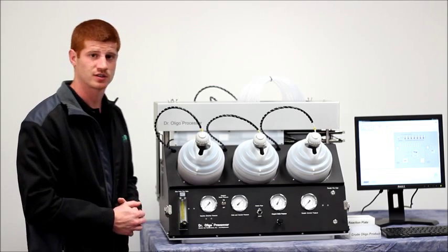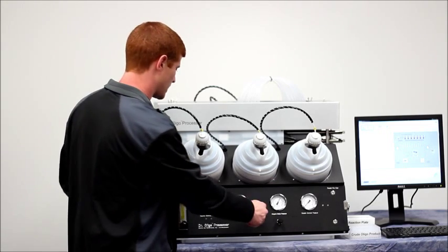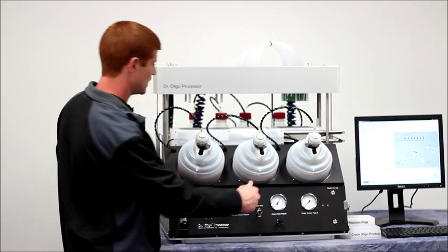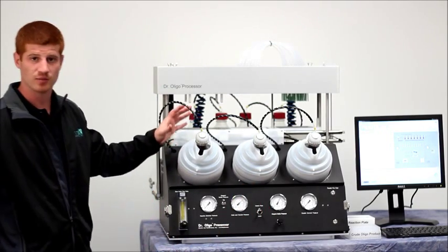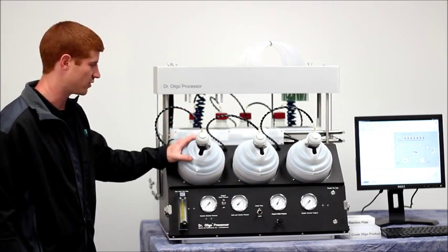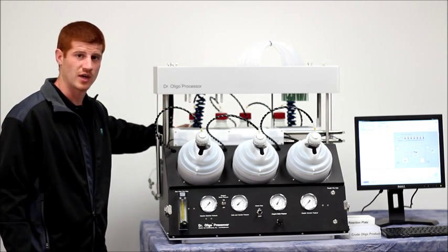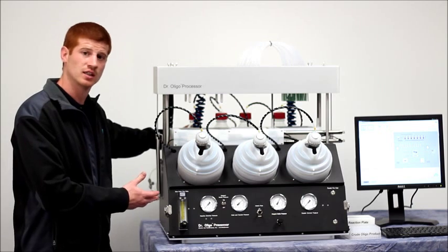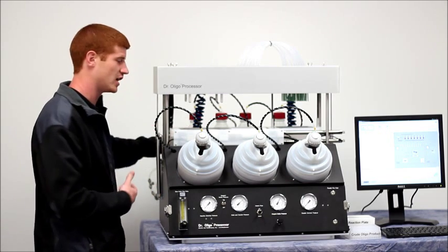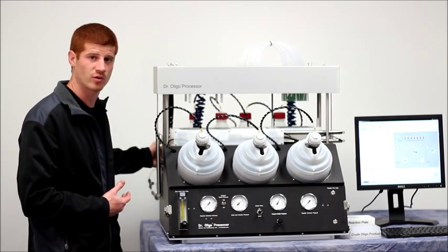So let us begin by opening this up and taking a closer look. As you can see, the three main bottle reservoirs here are on the front of the instrument. In addition to that, you have four here in the back for a total of seven. We can customize up to a total of eight total reagents depending on whatever process you're running.